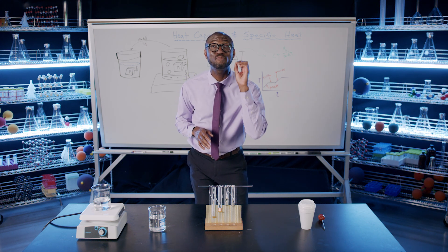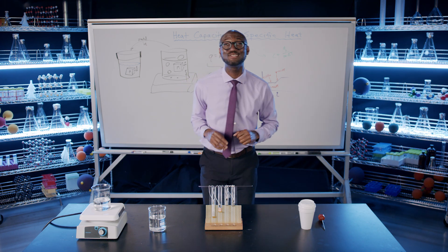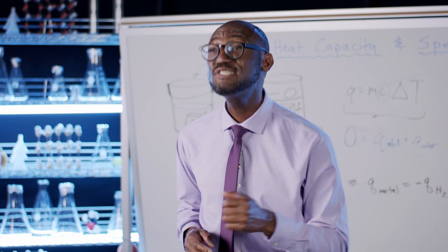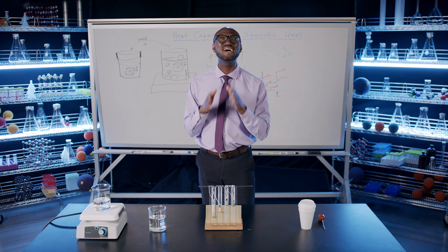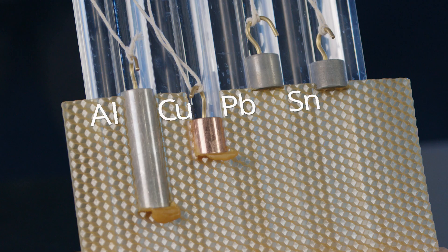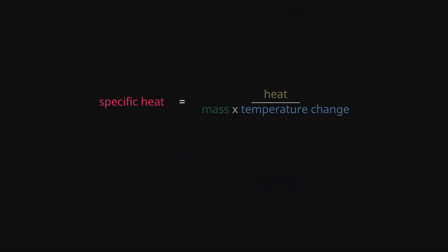What we can see now is the difference in the amount of wax that melted, due to the difference in the specific heats of the metals, even though they all had the same starting temperature. Since aluminum went the furthest, it gave off the most heat and melted the most wax — that means aluminum has the highest specific heat. Lead melted the least wax, so it gave off the least heat and has the lowest specific heat.